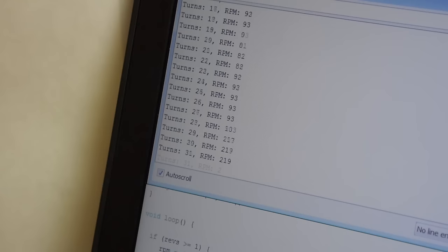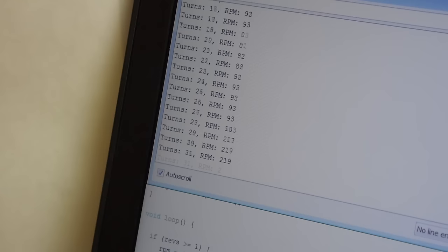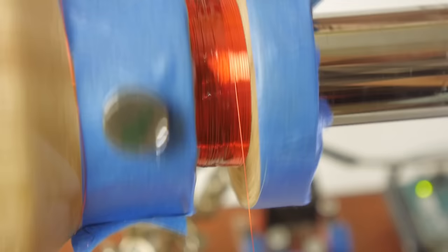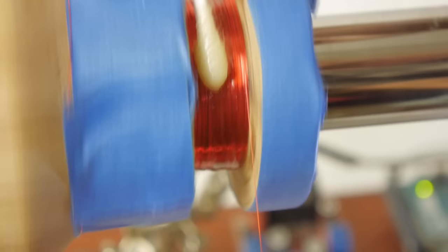I also connected a hall effect sensor to an Arduino and wrote a quick script to count the turns. Each time the magnet passed the sensor, the program would send an update over the serial connection giving the turn count and speed. I also stopped every so often to pot the coil in epoxy to hold everything together.